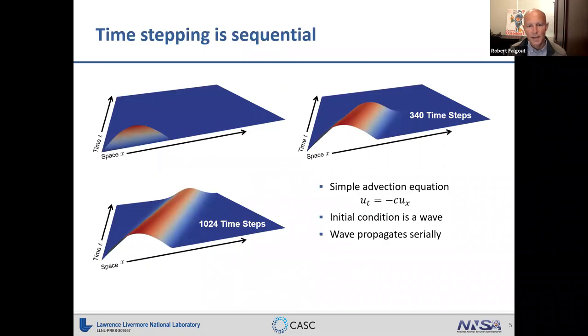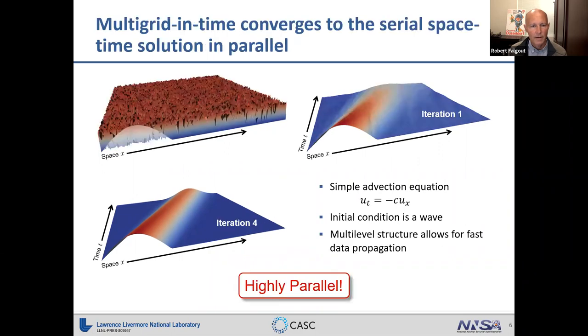This is just showing time stepping — what we'd normally do. Instead, when you apply multigrid, you solve the full space-time system at once and iterate to convergence.